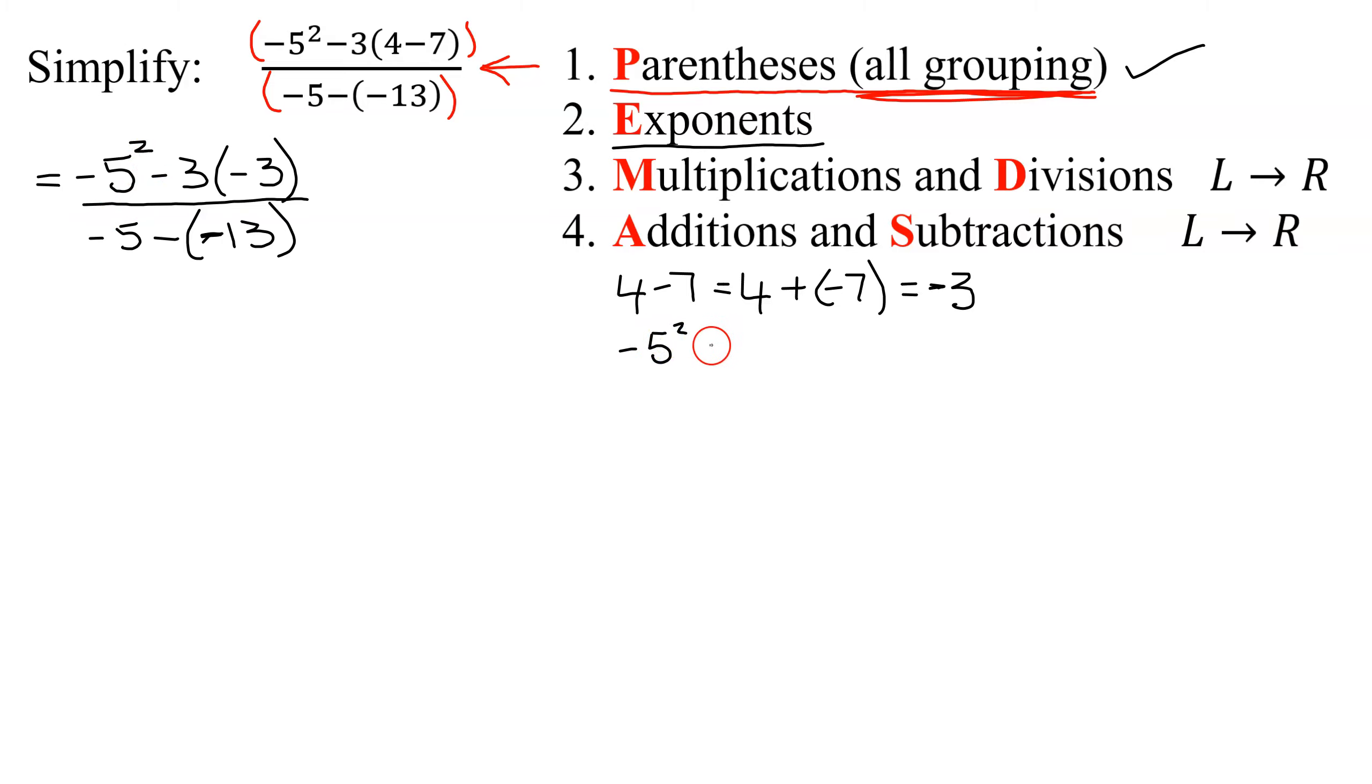Negative 5 squared means negative 1 times 5 squared. So it's negative 1 times 5 times 5 is 25. So the answer is negative 25.